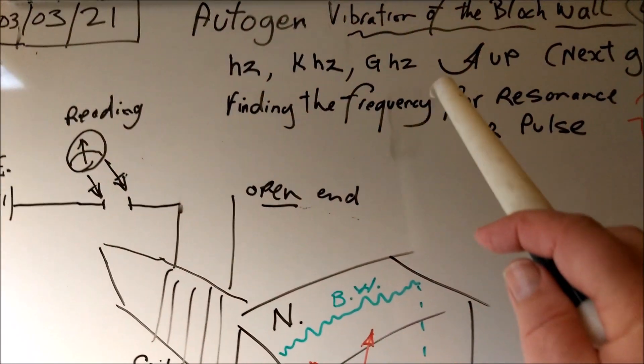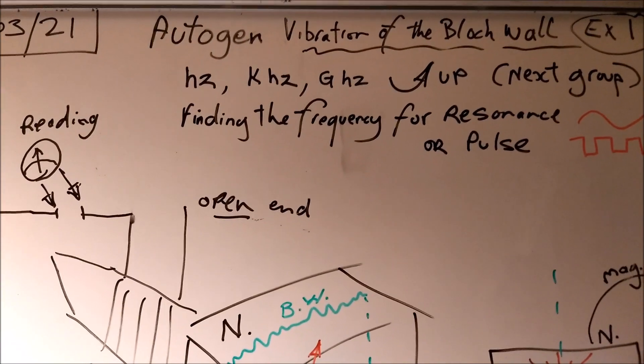Hi everyone, it's DC here, the third of the third 21. Today we've got autogen vibration of the blotch wall experiment number one. What I'm looking at is Hertzian, kilohertz, gigahertz and up, then higher and higher, as high as I can get.